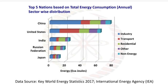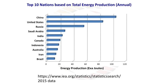For top 5 nations based on total energy consumption sector-wise: China is at the top, United States second, India third, Russian Federation fourth, and Japan fifth. For top 10 nations based on total energy production annually: China is first, United States second, Russia third, Saudi Arabia fourth, India fifth, and Brazil at the last position.